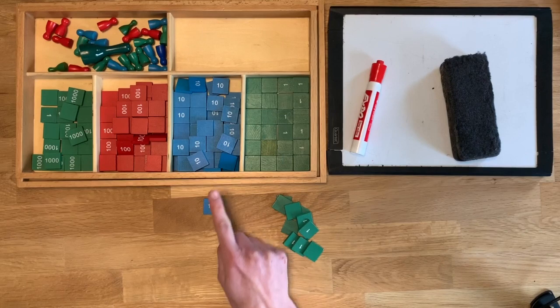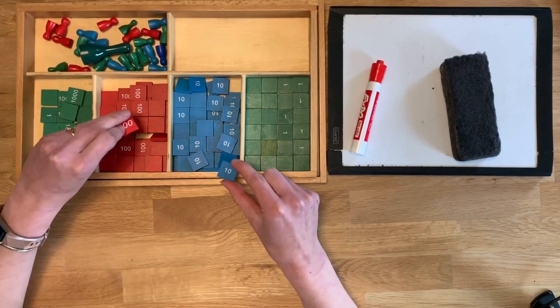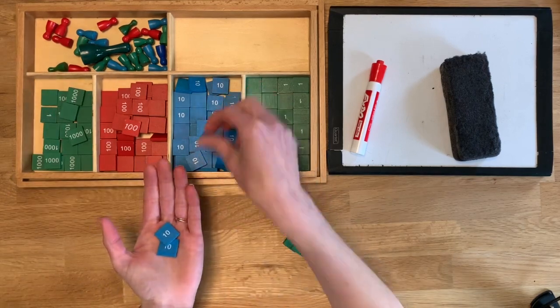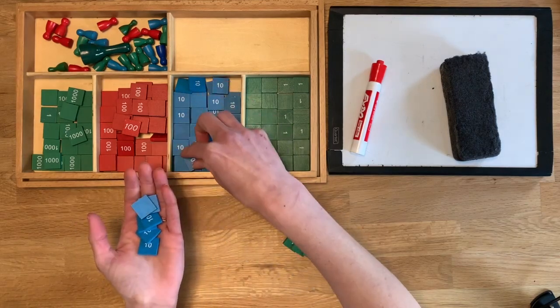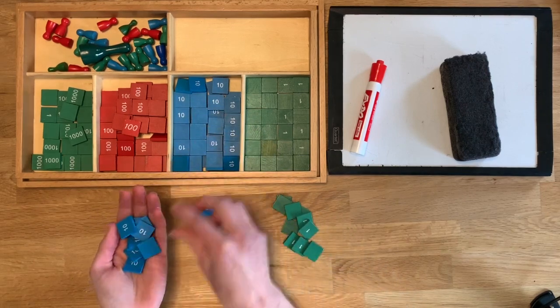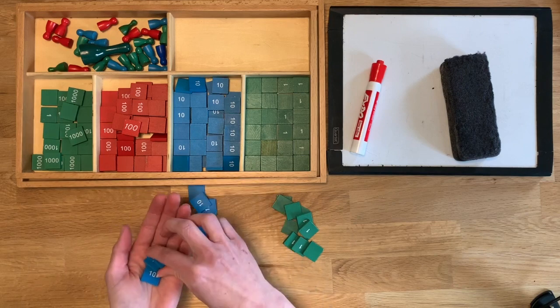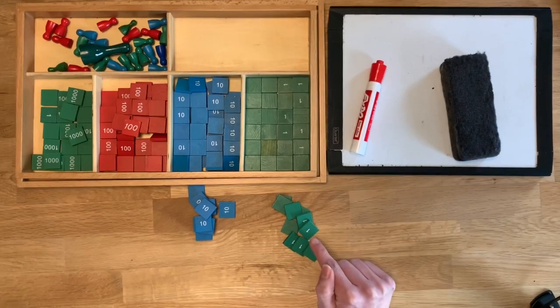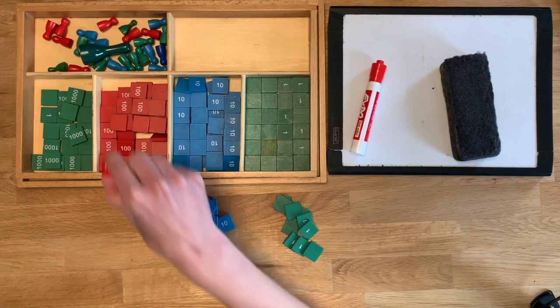So our tens are blue and how many tens equals 100? Let's try: 10, 20, 30, 40, 50, 60, 70, 80, 90, 100. Let's count that: 1, 2, 3, 4, 5, 6, 7, 8, 9, 10. Oh so 10 units equals 1 ten equals 1 ten and 10 tens equals 100.